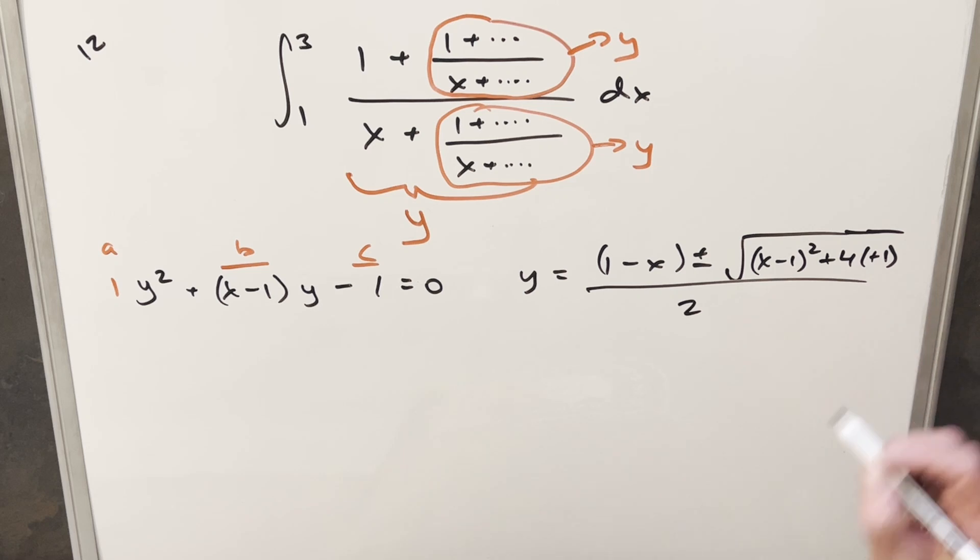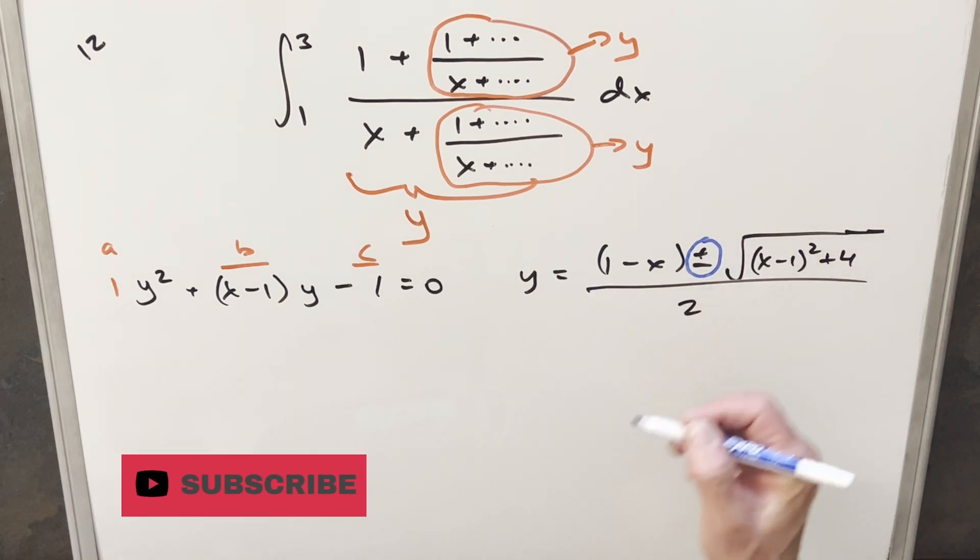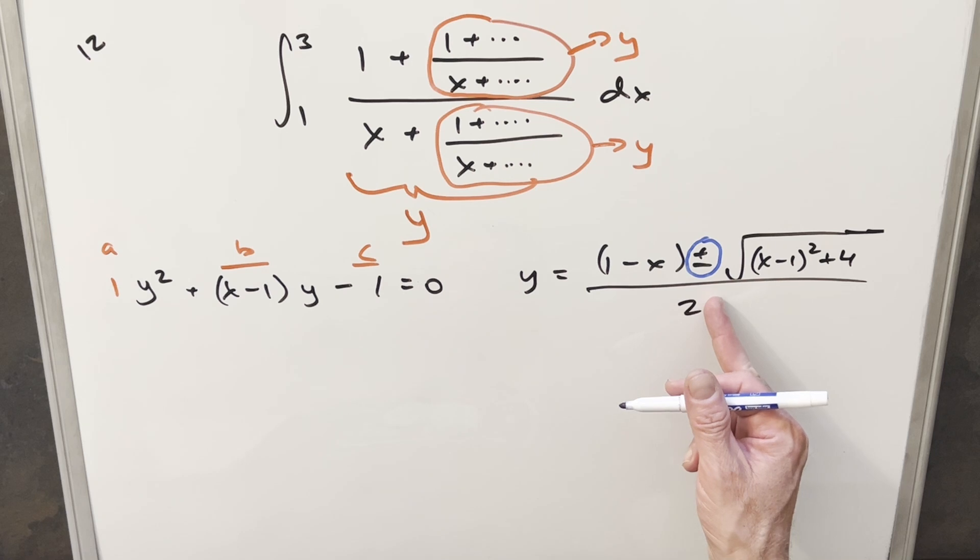Now minus times minus here is going to give me a plus. And then what I want to do here is I want to deal with this plus or minus. We want just one value for this. We're not going to really want that plus or minus right there.